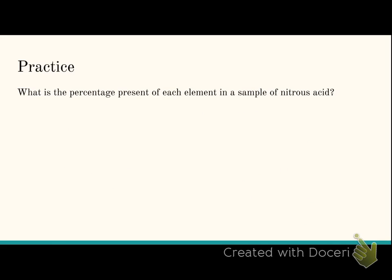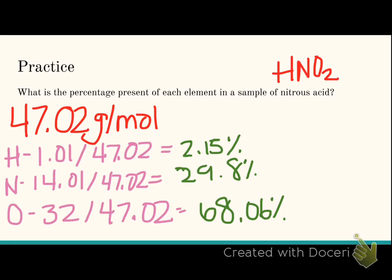We're going to do a practice problem here. Write this down, pause it, when you are done, come back, we'll check your answer. What is the percentage present of each element in a sample of nitrous acid? Remember, -ous comes from -ite, so this is from nitrite, so HNO2 is your compound that we're looking at. Finding the molar mass of that, you should get 47.02. Remember, if a little bit is off on that decimal, it's really okay.